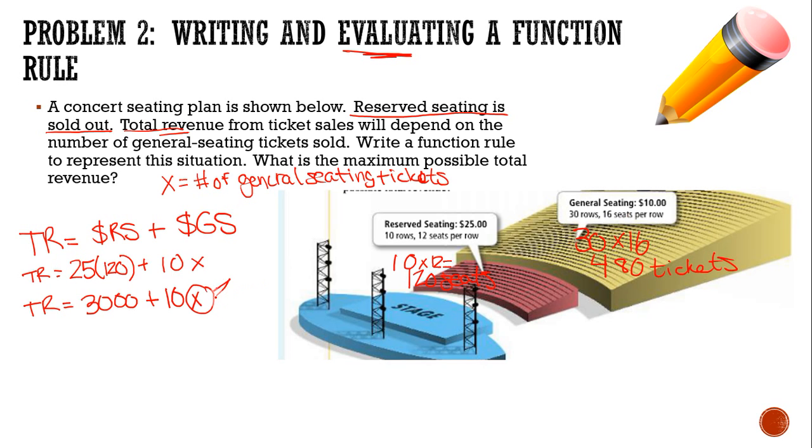So what if I make X 480? What if I sell out everything? 3,000 then, plus 10 times 480. So I get 3,000 plus 10 times 480 is 4,800. Which if I add those two together, 7,800. So $7,800. That's my total revenue for the entire concert. Pretty good.